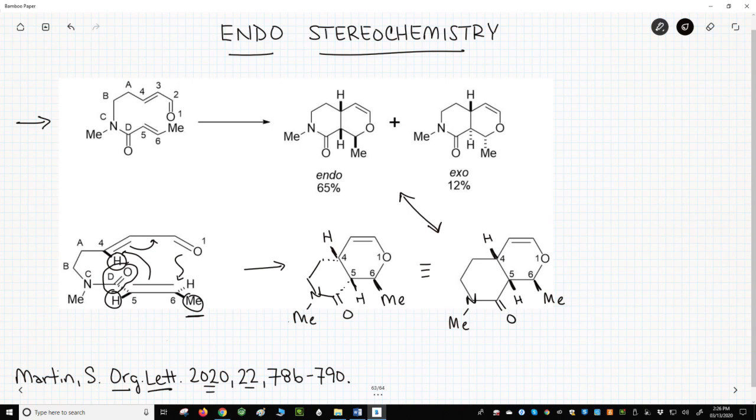For the exo product, let's go to the far right. On the dienophile, C5, the carbonyl will be up. And the methyl on C6 will be back. Those orientations lead to the exo product. The stereochemistry at C5 and C6 is reversed. But the rest of the product is the same.